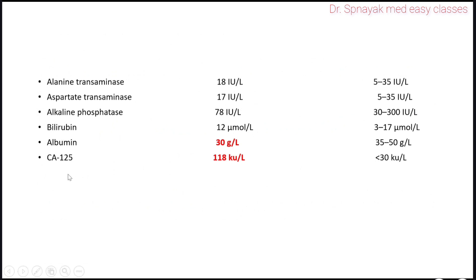CA-125 is the biomarker for ovarian cancer or carcinoma. This is also elevated at 118 KU per litre.